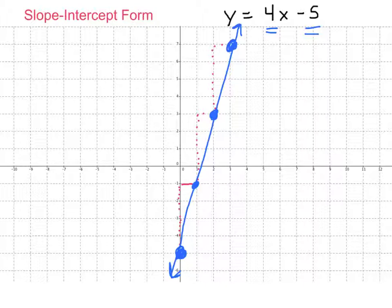So in a nutshell, we've learned two ways to get a picture of a linear equation. In standard form, we use the intercepts. In slope-intercept form, we plot the y-intercept and then use the rise over run from the slope to make the other points. We can get a line either way.